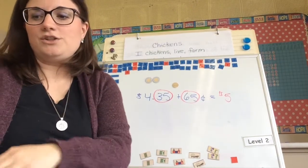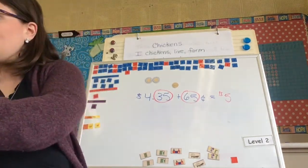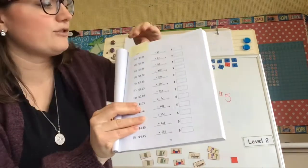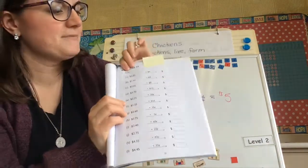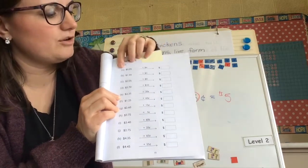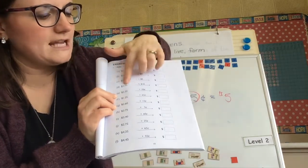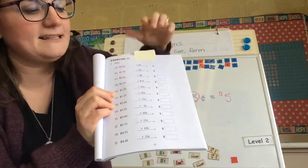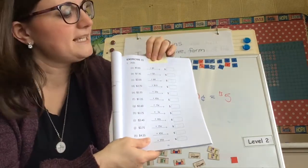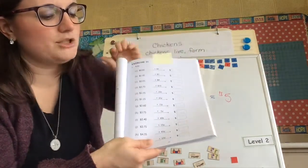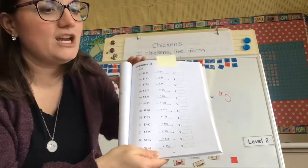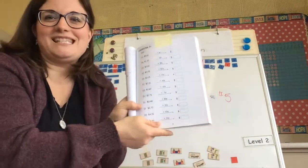You're going to do the same thing in your workbook today. You're going to do exercise 31 and you're going to add. Up top it shows adding dollars, and down below we start adding some cents. You can count up by fives and by tens to find out how much money you have. This is the page you're going to do today. We'll see you tomorrow.